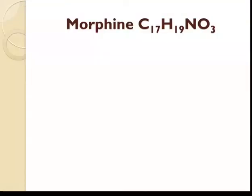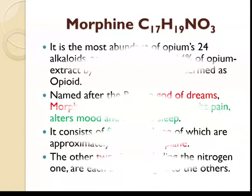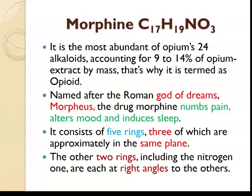This is the morphine structure and its molecular formula. It is the most abundant of opium's 24 alkaloids, accounting for 9 to 14 percent of opium extract by mass. Named after the Roman god of dreams, Morpheus, the drug morphine numbs pain, alters mood, and induces sleep.